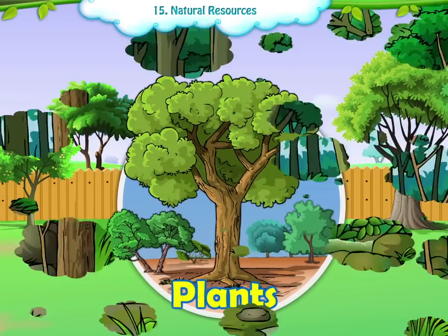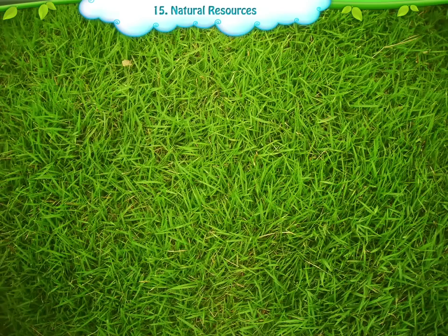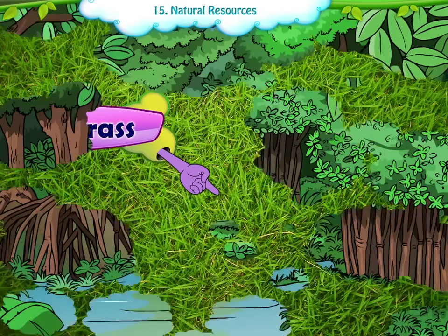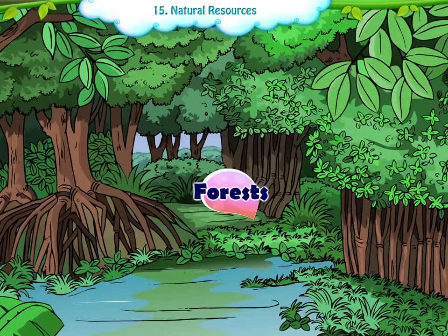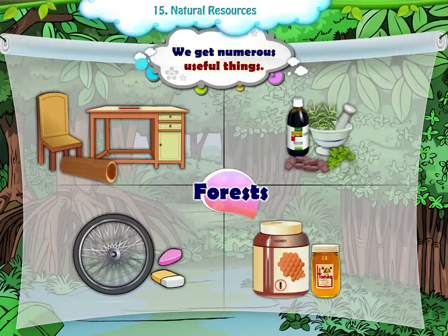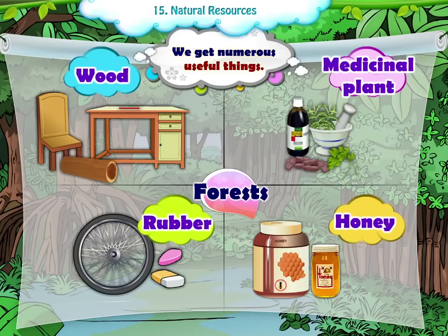There are plenty of trees, shrubs and grass around us. We have dense forests. From the trees, we get wood. We also get medicinal plants, rubber and honey from the forest.